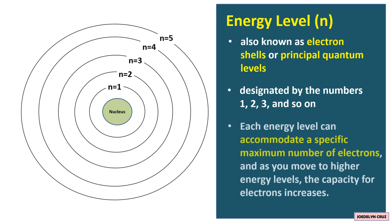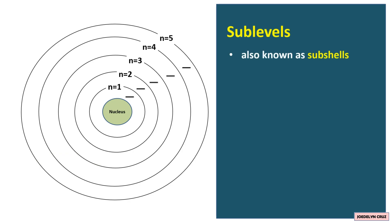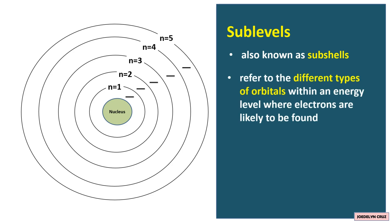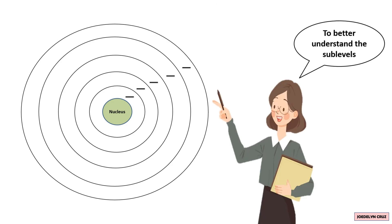Each energy level can accommodate a specific maximum number of electrons, and as you move to higher energy levels, the capacity for electrons increases. Under each energy level there are sublevels — one sublevel in the first energy level, more sublevels in the second energy level, and so on. The sublevels are also known as subshells. These refer to different types of orbitals within an energy level where electrons are likely to be found. The sublevels or subshells are labeled with letters S, P, D, and F, and each has a distinct shape and orientation.